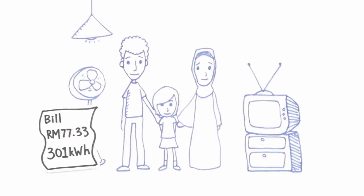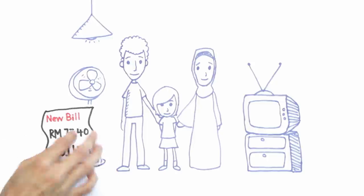This means they use an average of 301 kilowatt hour every month. With the revised tariff, their average new monthly bill will be 77 ringgit and 40 cent.